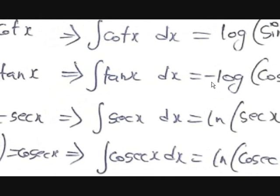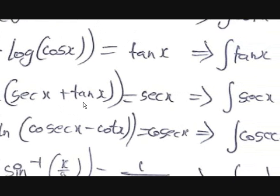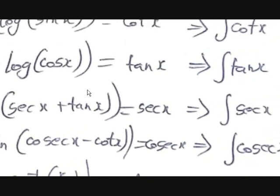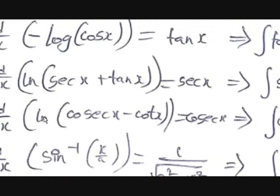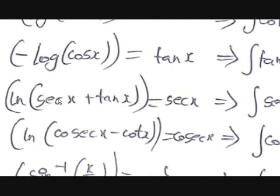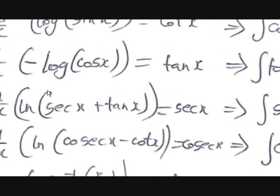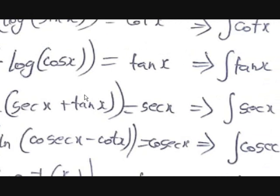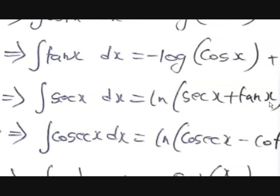The derivative of ln(sec x + tan x) equals sec x. Taking d/dx of ln(sec x + tan x), we get (1/(sec x + tan x)) · (sec x · tan x + sec²x). Factoring out sec x gives sec x · (tan x + sec x), which cancels with the denominator (sec x + tan x), leaving sec x. So the integral of sec x dx is equal to ln(sec x + tan x) plus c.